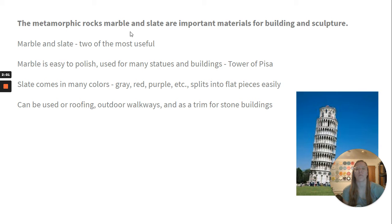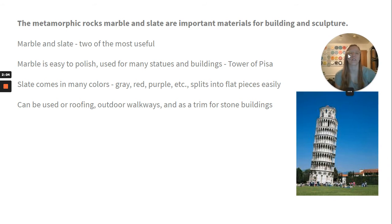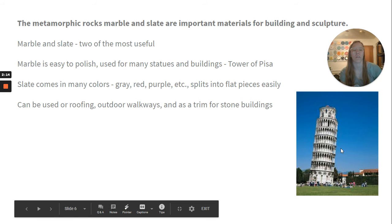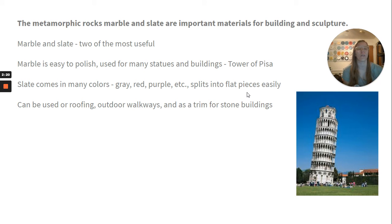Metamorphic rocks — marble and slate — are important materials for building and sculpture. Marble and slate are two of the most useful metamorphic rocks. Marble is easy to polish and is used for many statues and buildings, such as the Tower of Pisa, which you see here. Slate comes in many colors — gray, red, purple, and more — and it splits into flat pieces easily. Slate can be used in roofing, outdoor walkways, and as trim for stone buildings.